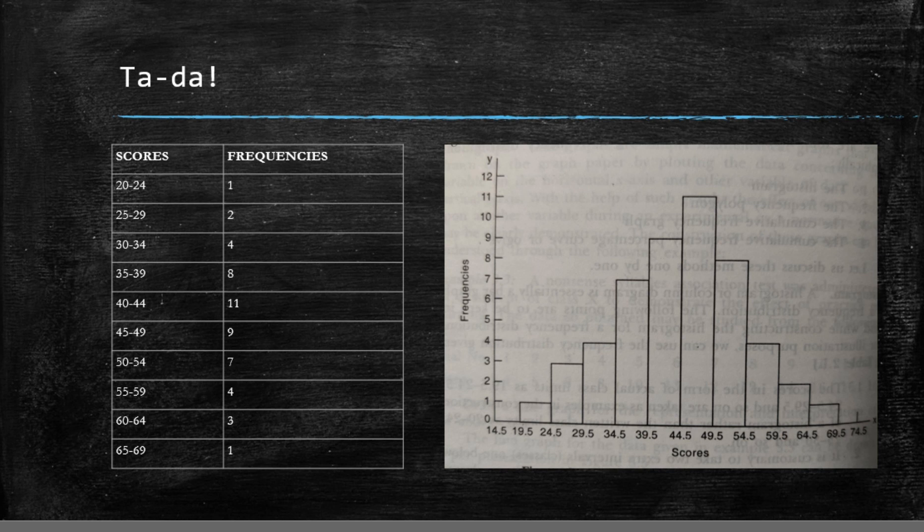The histogram on the right depicts the frequency distribution on the left. You may pause the video and observe how boundary limits have been chosen along the x-axis. Not only that the two extra classes have zero frequencies so as to not alter the data of frequency distribution.